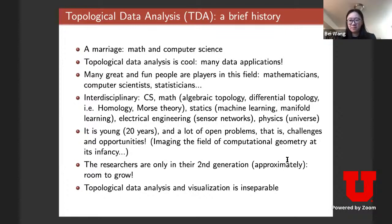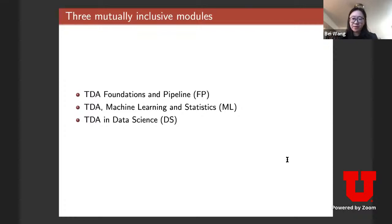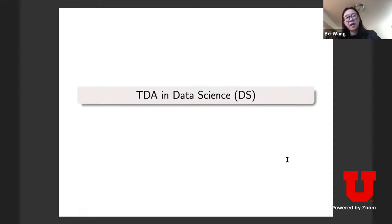There are three components throughout the material in this class: foundational methods and theory, algorithms and machine learning/statistics, and how it's applied in data science. Let's start with the data science side — a few examples of how topology techniques have classically been used in various applications.